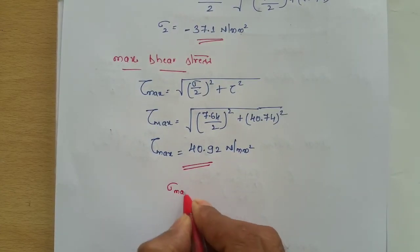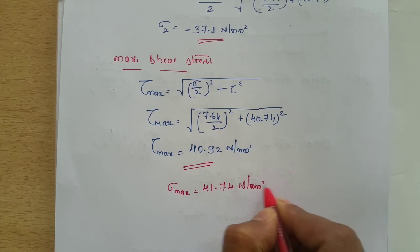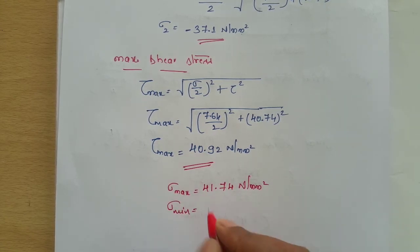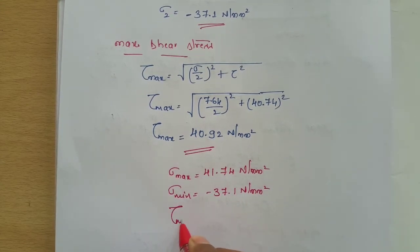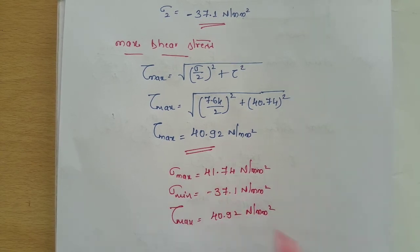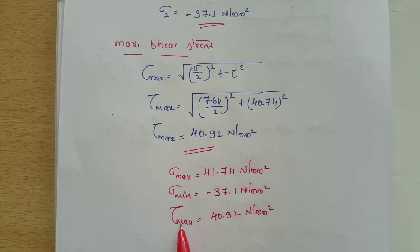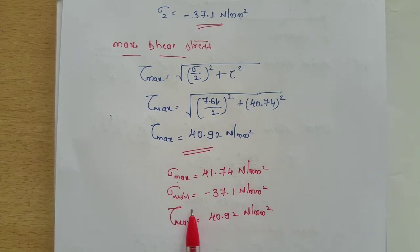To summarize: sigma_max = 44.71 N/mm², sigma_min = −37.1 N/mm² (compressive), and tau_max = 40.92 N/mm². These are the principal stresses — maximum principal stress, minimum principal stress, and maximum shear stress. In this problem only an axial load and a twisting moment were given. In the next video we will solve a problem that also includes a bending load. If you liked this video, please comment, share with your friends, and subscribe to our channel.